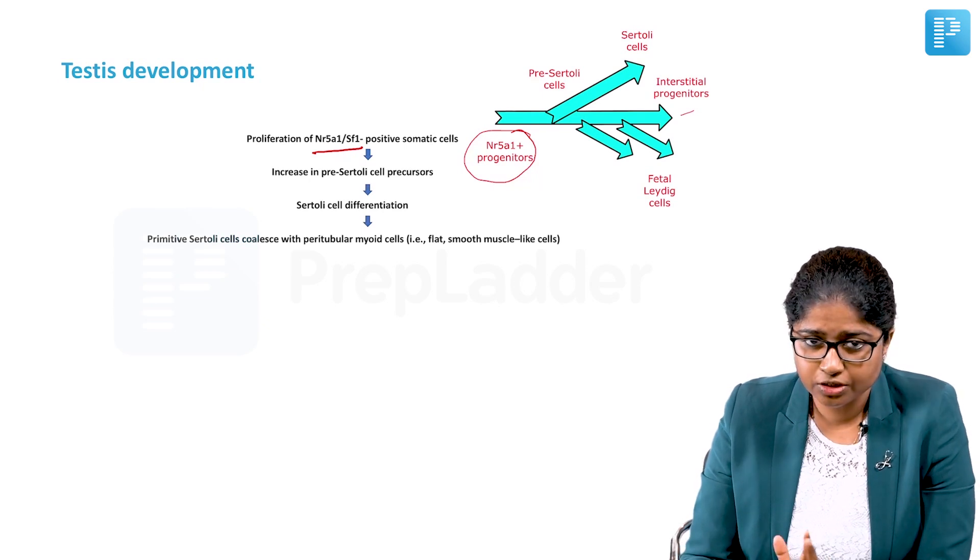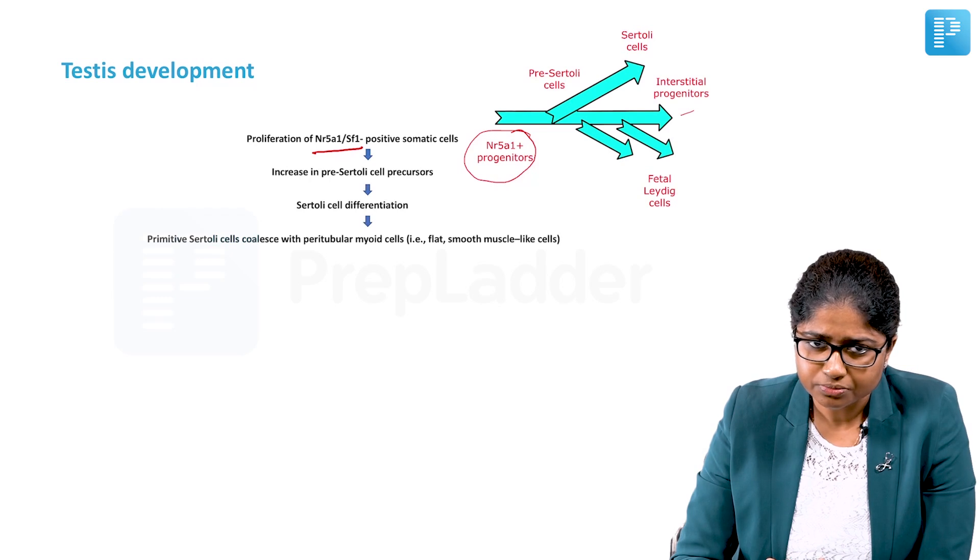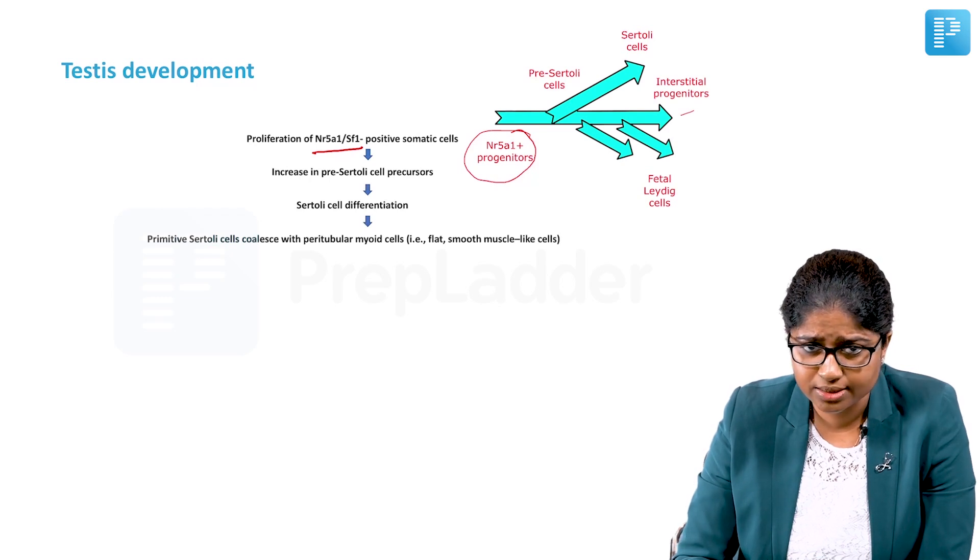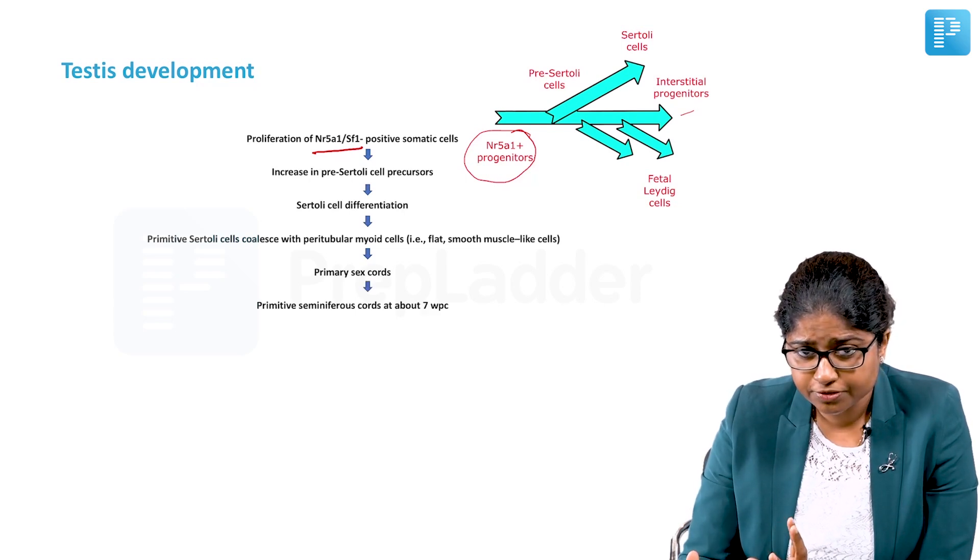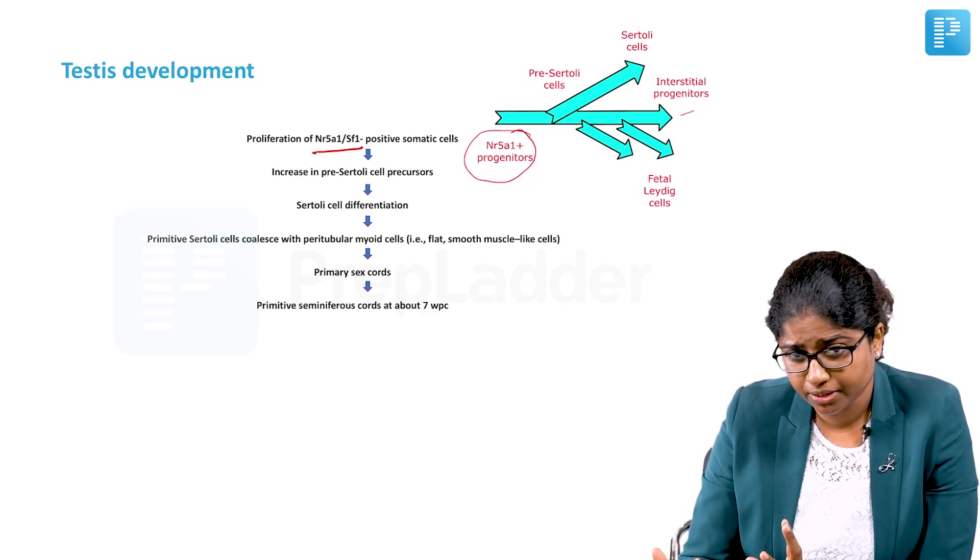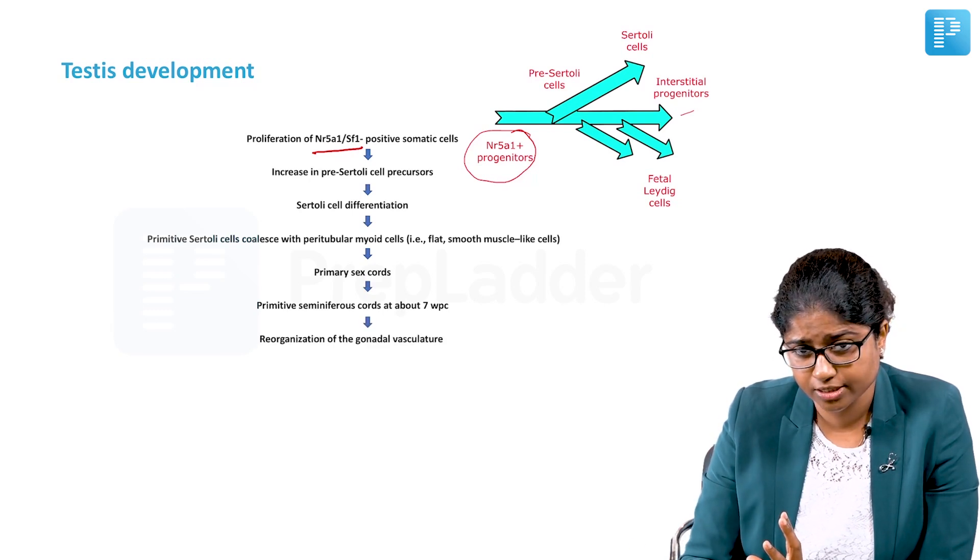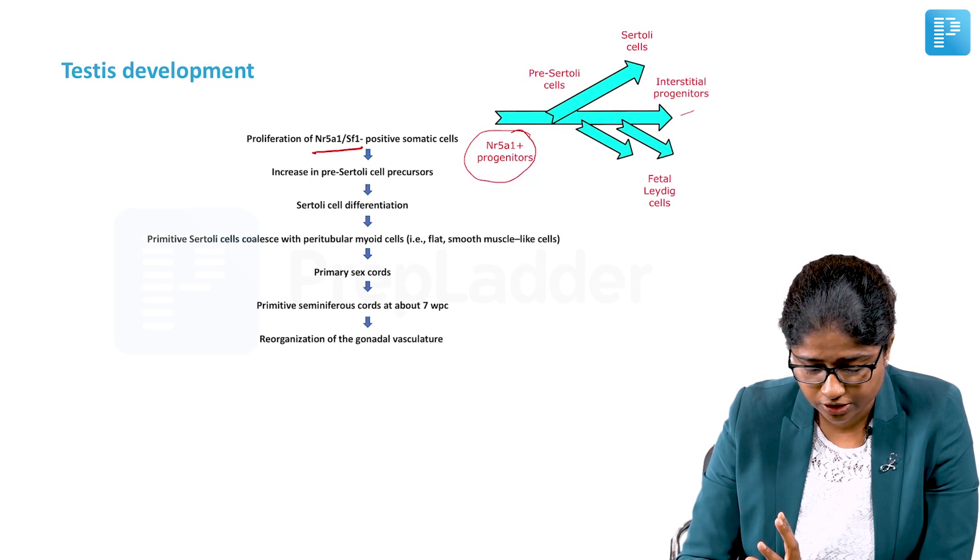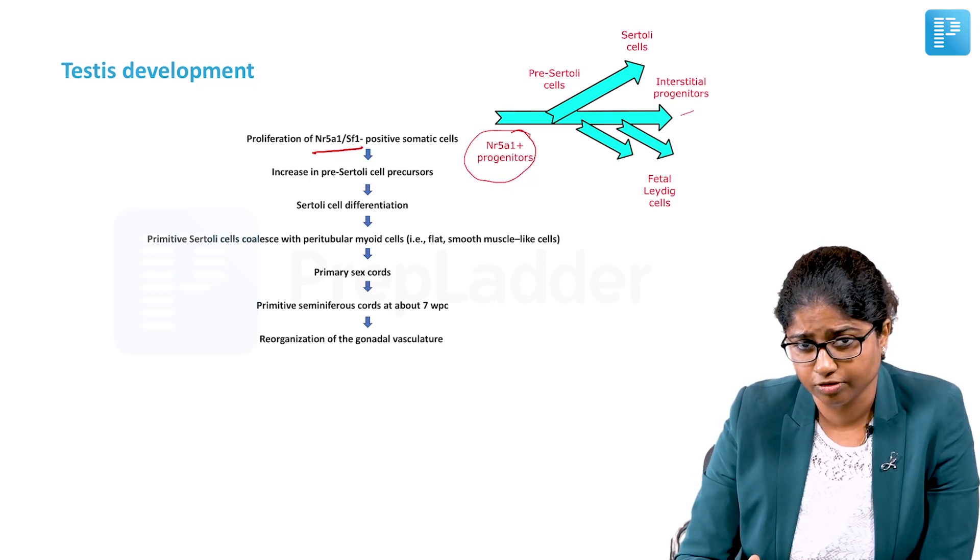Then the primitive Sertoli cells coalesce with the peritubular myoid cells, which are nothing but flat smooth muscle cells, and then they form the primary sex cords. The primitive seminiferous cords are formed from the primary sex cords around 7 weeks post conception, and then there is reorganization of the gonadal vasculature. These are the first few events that happen during testicular development.